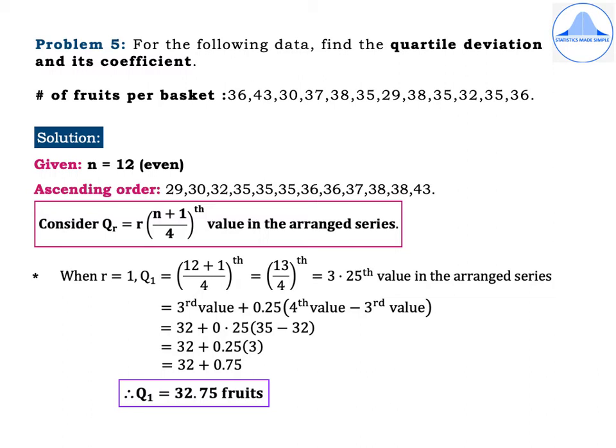Using the formula Q_R = R × (N + 1) / 4 th value in the arranged series. When R = 1, Q1 = (12 + 1) / 4 = 13/4 = 3.25th value. The 3.25th value = 3rd value + 0.25 × (4th value − 3rd value) = 32 + 0.25 × (35 − 32) = 32 + 0.25 × 3 = 32 + 0.75. Therefore Q1 = 32.75 fruits.